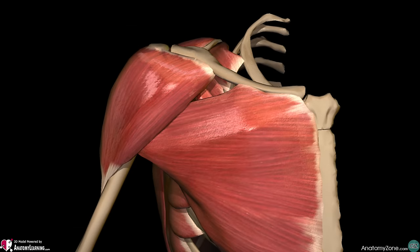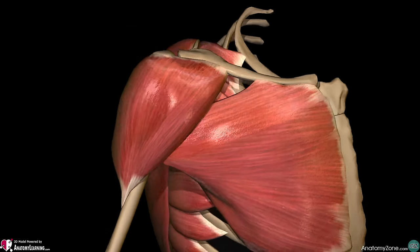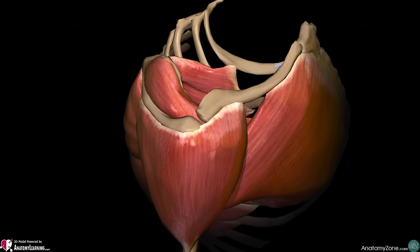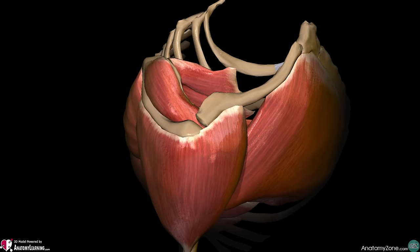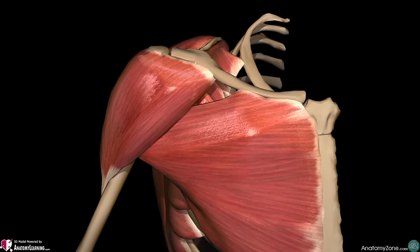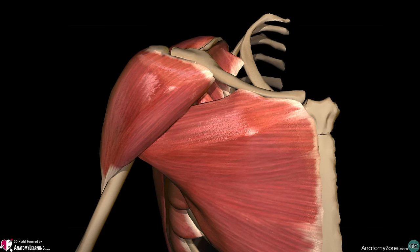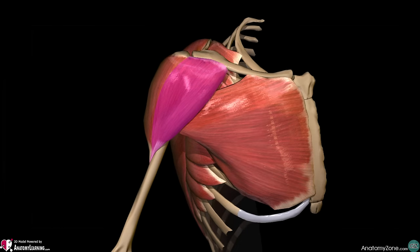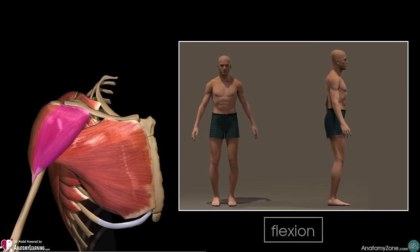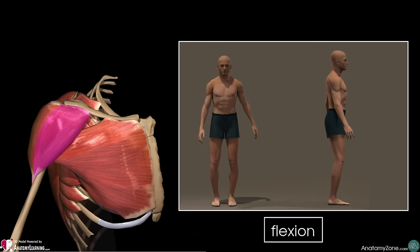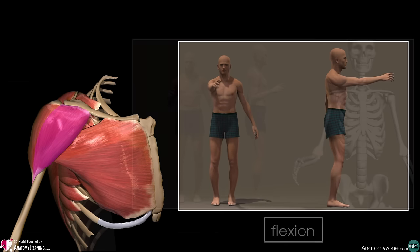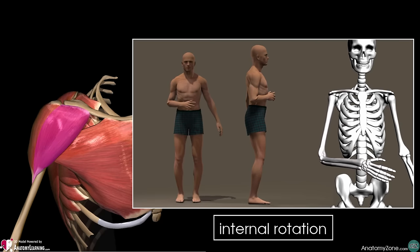The morphology of the deltoid muscle, with its three sets of fibres extending from anterior to posterior around the glenohumeral joint, means that this muscle can produce several movements depending on whether the fibres contract independently or simultaneously. As you may expect from its origin, the anterior fibres draw the arm forwards to flex the shoulder, and they can also medially rotate the humerus.